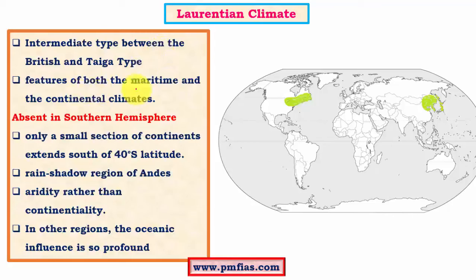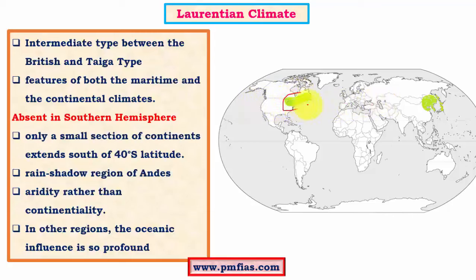The Laurentian climate includes features of both maritime and continental climates. It is greatly influenced by oceanic conditions especially in summer months, whereas in winter months it is affected by continentality — that is, greater distance from the oceans. Although these regions appear close to oceans, westerlies blow as offshore winds, making this area greatly influenced by continentality. This is true for both the Northeast American region and parts of the Asiatic region.